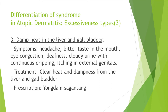Third, damp heat in the liver and gallbladder can be a pathogen. Symptoms include headache, bitter taste in the mouth, eye congestion, deafness, cloudy urine with continuous dripping, and itching in the external genitals. By using yongdam saagantang, heat and dampness from the liver and gallbladder can be cleared.